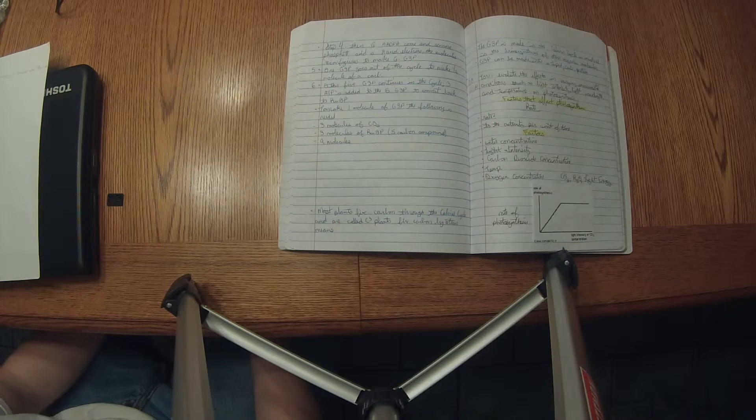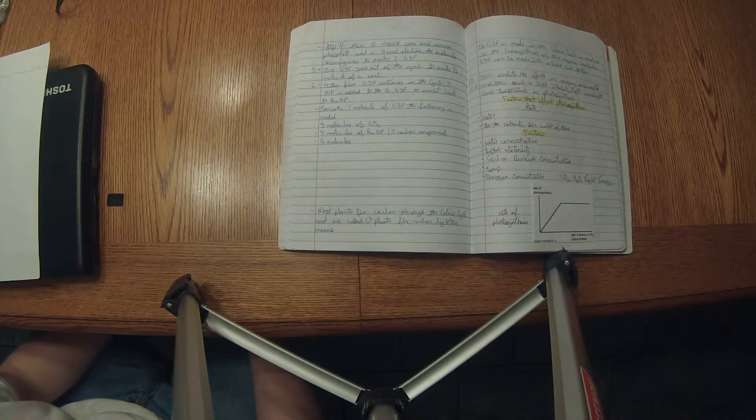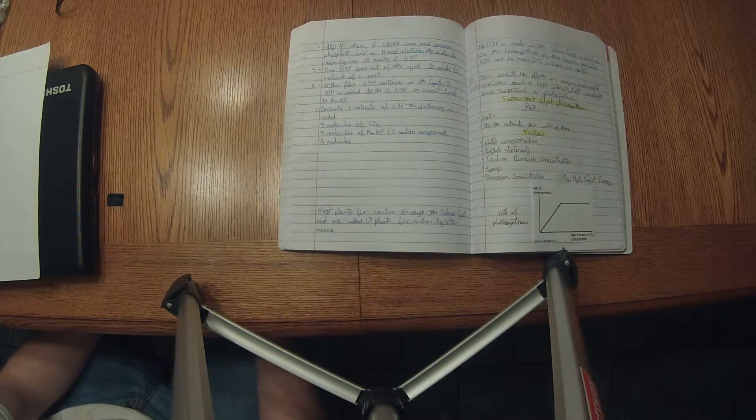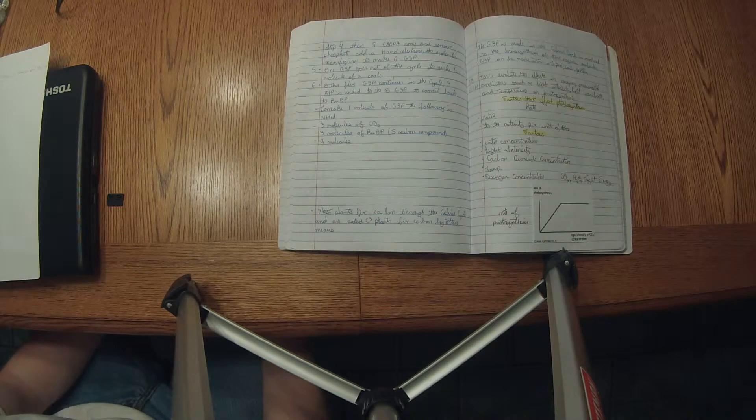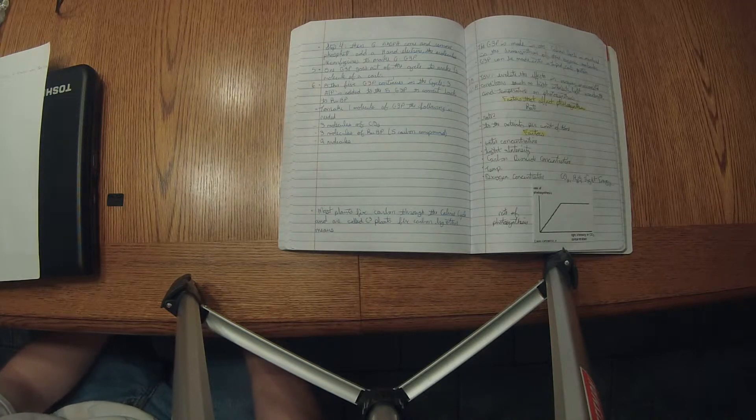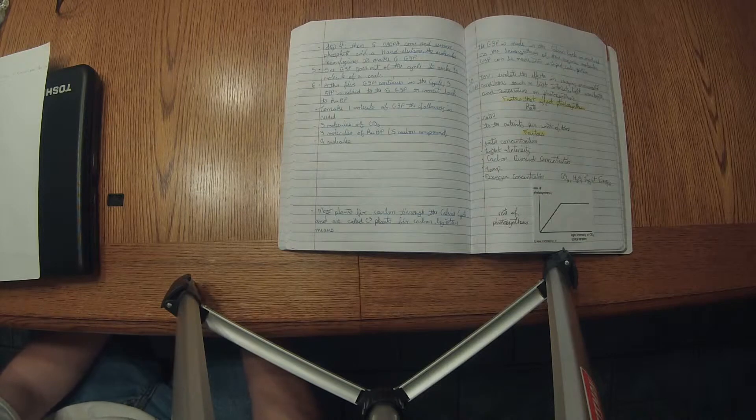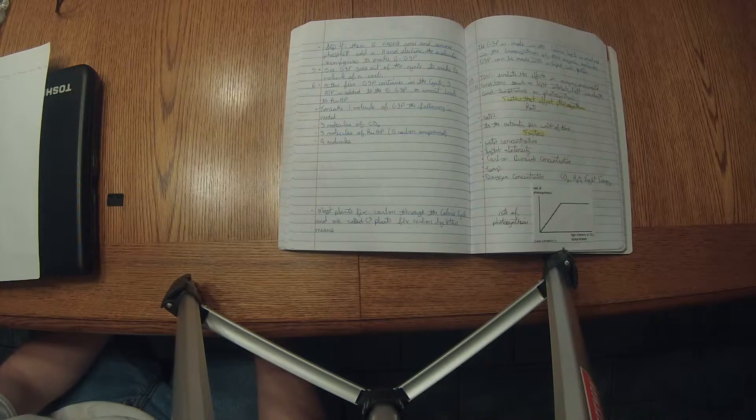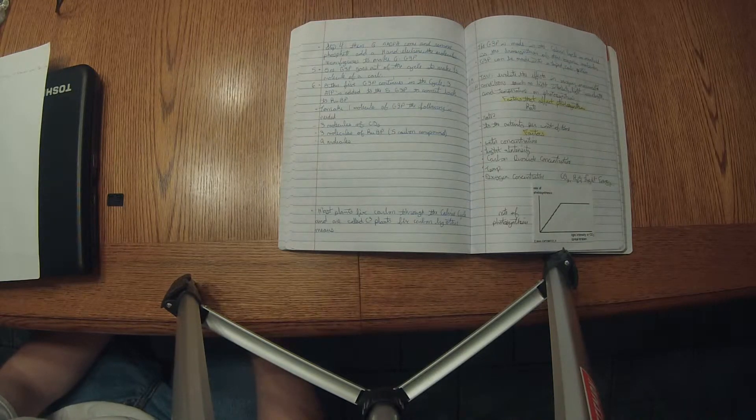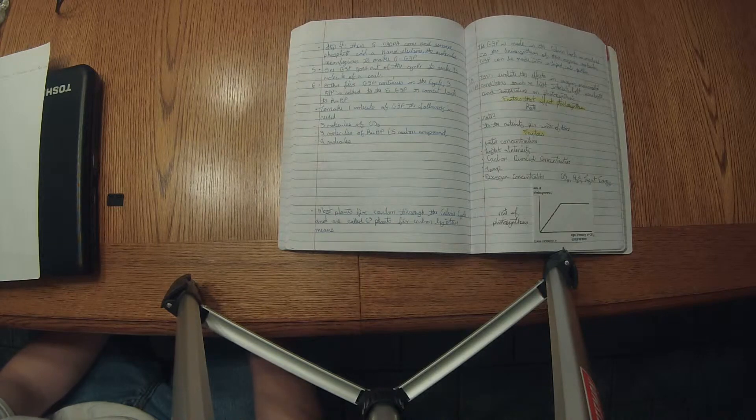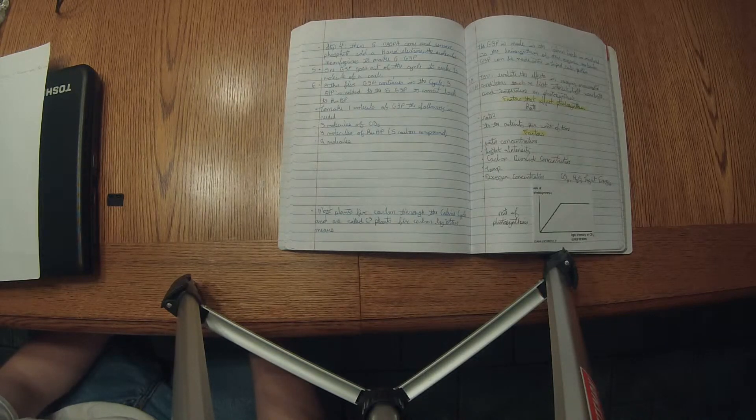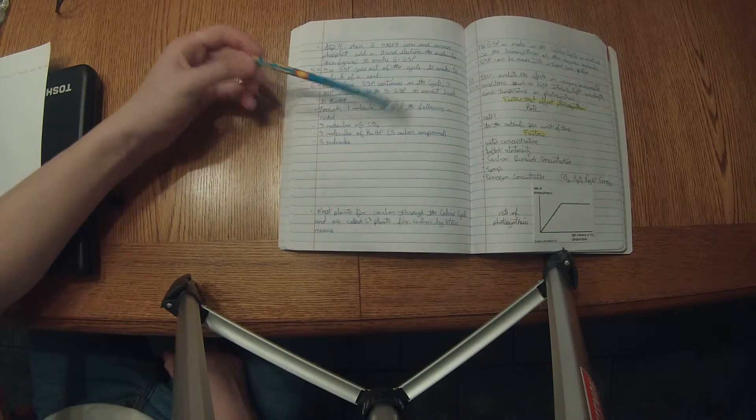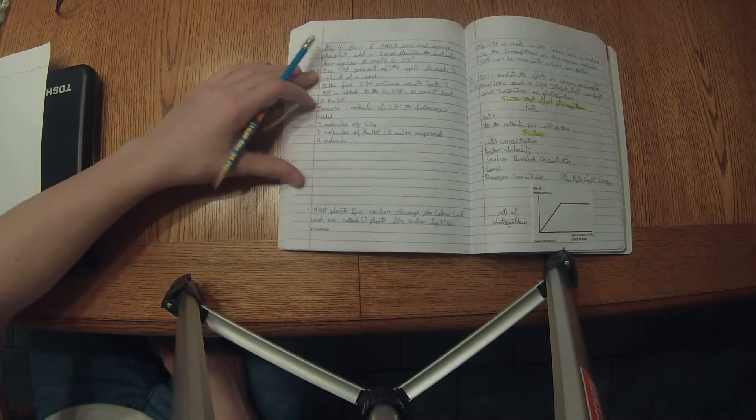The molecule reconfigures to make six G3P. One G3P goes out of the cycle to make one half of a carb, which would be either a lipid, a fat, or a protein. Five G3P continues in the cycle. Three ATP is added to the five G3P to convert back to RuBP. To make one molecule of G3P the following is needed: three molecules of CO2, three molecules of RuBP which is the five carbon compound, and nine molecules total.